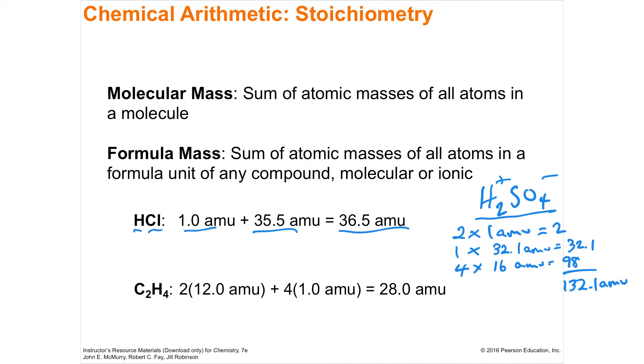If you were to have a molecule like C2H4, this is ethane, you would have 2 times 12.0, and you get that from the periodic table, plus 4 times 1 AMU. Multiply them and then add them together, and you get a total of 28.